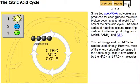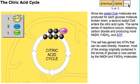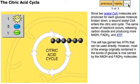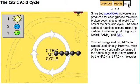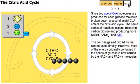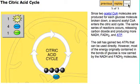Since two acetyl CoA molecules are produced for each glucose molecule broken down, a second acetyl CoA enters the citric acid cycle. The same series of reactions occurs, releasing carbon dioxide and producing more NADH, FADH2, and ATP.